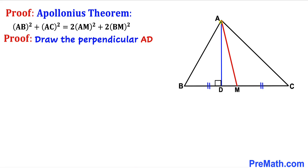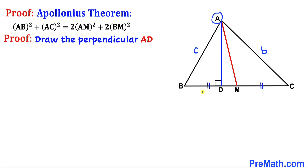Our very first step is to draw a perpendicular AD such that angle BDA is 90°. To make things simple, let's label the side lengths. The side opposite vertex C is lowercase c, the side opposite vertex B is lowercase b, and the side opposite vertex A — we'll call BM as 'a' and MC as 'a' as well, since these two are equal in length.